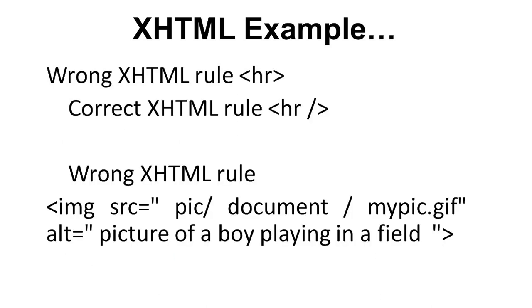Another XHTML example: the wrong XHTML rule is not providing the closing for the HR tag. The correct XHTML rule closes HR. Similarly, a wrong XHTML rule is writing an IMG tag with source and alt attribute 'picture of a boy playing in the field' without closing it — this is a wrong XHTML rule and will not be accepted.